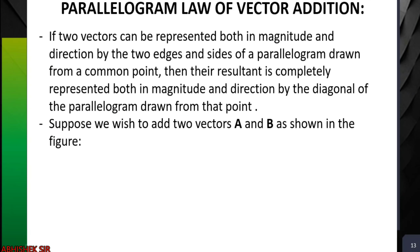Now the parallelogram law of vector addition. Statement: if two vectors can be represented both in magnitude and direction by two sides of a parallelogram drawn from a common point, then their resultant is completely represented both in magnitude and direction by the diagonal of the parallelogram drawn from that same point. The two vectors are co-initial — drawn from a common point.